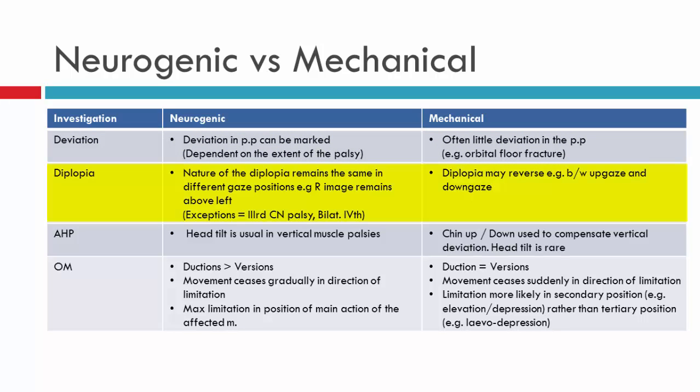In terms of diplopia, it remains relatively consistent in neurogenic palsies — a right-on-left in primary should be right-on-left in all positions of gaze. There are exceptions with third nerve palsies and bilateral fourth nerves, but generally with an isolated muscle palsy, the deviation should remain consistent in all positions of gaze. Mechanical restrictions, however, often show reversal of the deviation — for example, a right-on-left in up gaze and then a left-on-right in down gaze. With neurogenic palsies, if a patient develops an abnormal head posture, they often demonstrate a head tilt, whereas mechanical restrictions usually just have chin-up or chin-down postures. Head tilting is quite rare in mechanical restrictions.